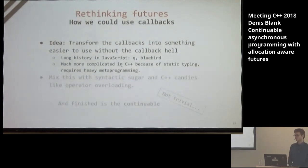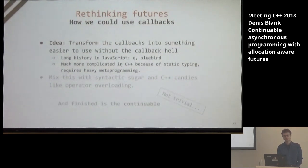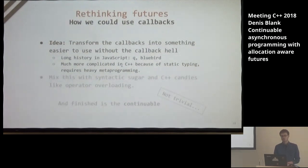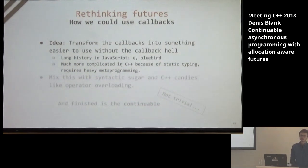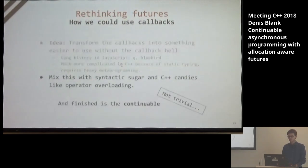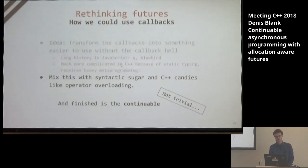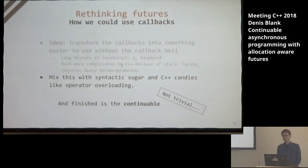The idea could be to transform callbacks into something easier to use without callback hell. This has a long history in JavaScript — frameworks like Q and Bluebird transform callbacks so you can use them nicely. But it turns out this is much more complicated in C++ because of static typing, requiring heavy metaprogramming. The idea could also be to mix this with syntactic sugar and C++ features like operator overloading. It turns out this is not trivial, and I will guide you through this process.